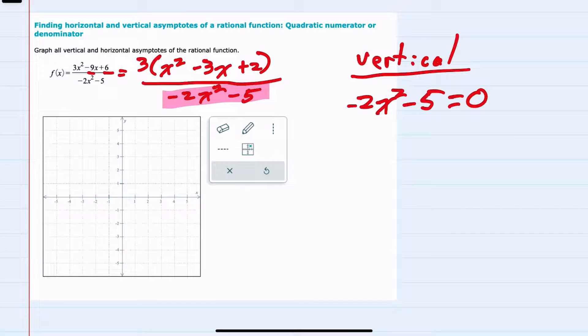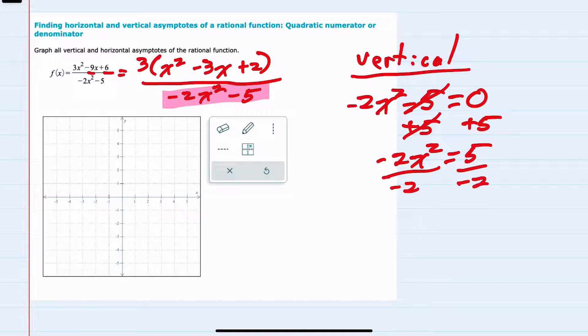To isolate the x, I would move the 5 over to the other side, giving me on the left-hand side -2x² = 5. Isolating the x², I would divide by -2 on both sides, and I get x² = -5/2.